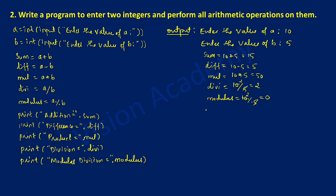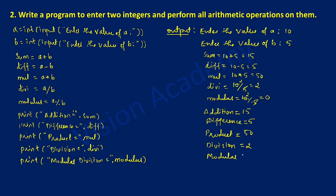Now it is going to print: addition is equal to sum, which holds the value 15. Similarly, difference is equal to diff, which holds the value 5. Next, product is equal to 50. Similarly, division is equal to divi, which holds the value 2. And modular division is equal to the modulus variable, which holds the value 0.